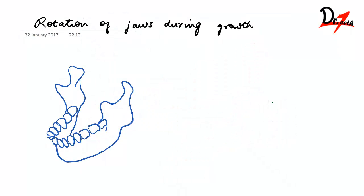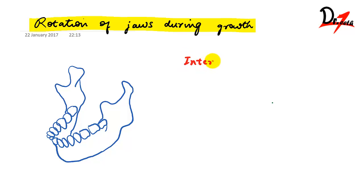Today we are going to study about rotation of jaws during growth. During growth we find two types of rotation: one is the internal rotation and the other one is the external rotation.